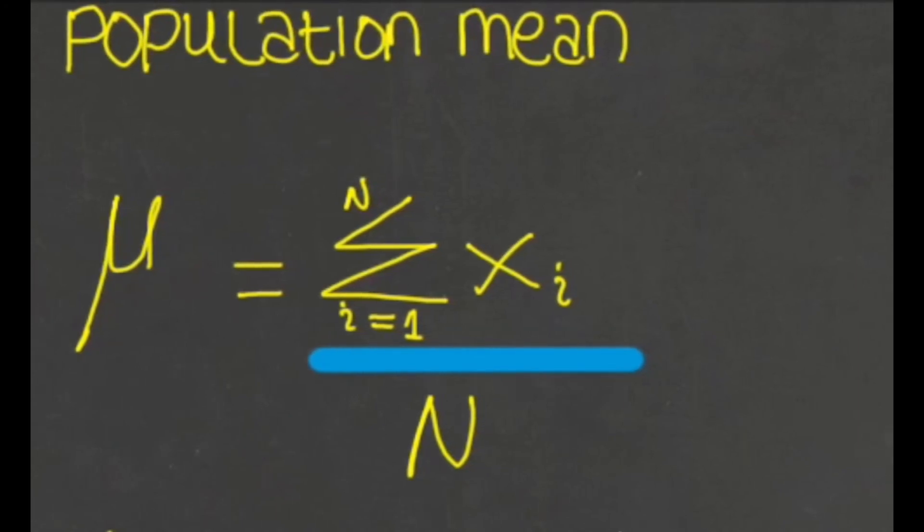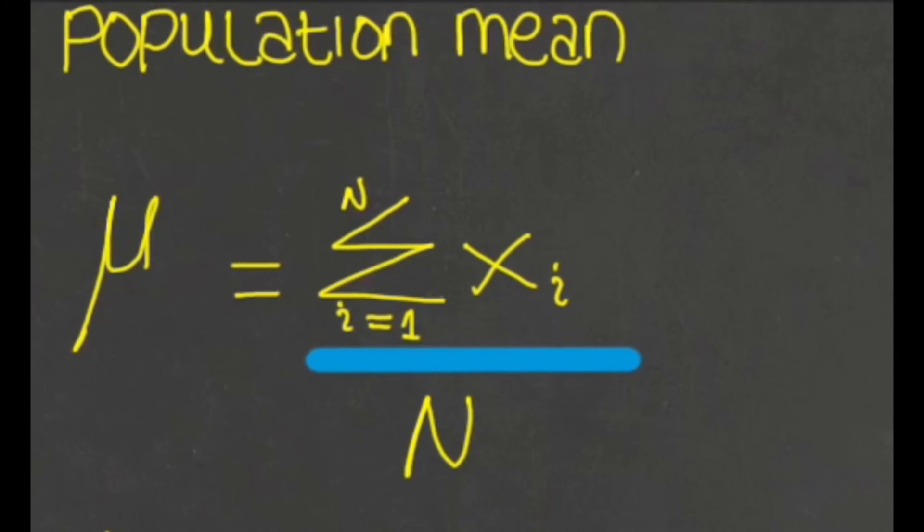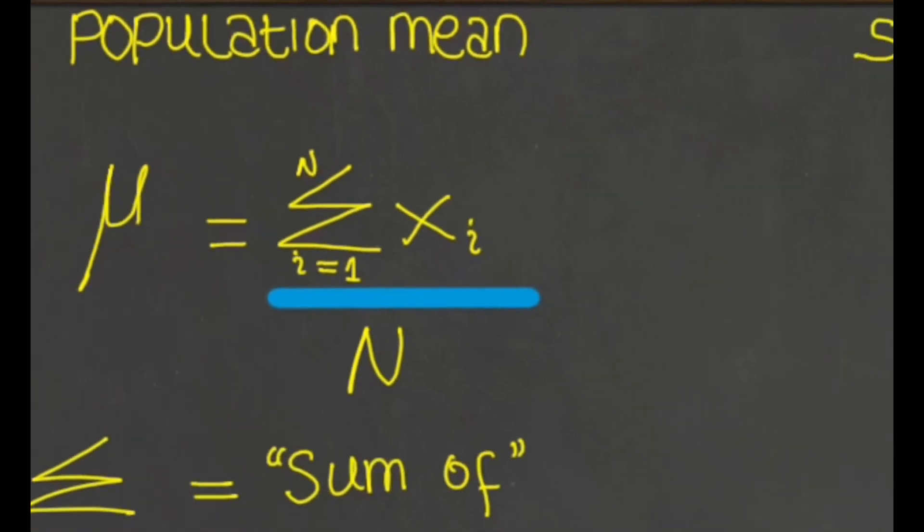From the first in the list, that's the i equals to 1, to the last in the list, which is equal to capital N. And divided by the number of individuals, which is N. Awesome, right? Now let's see that of the sample mean.